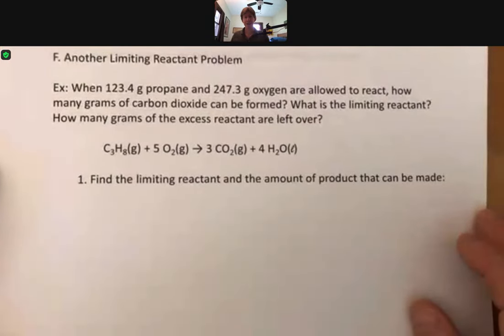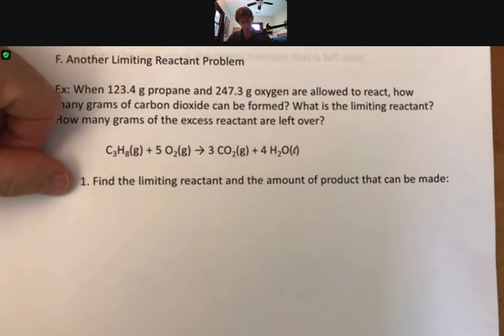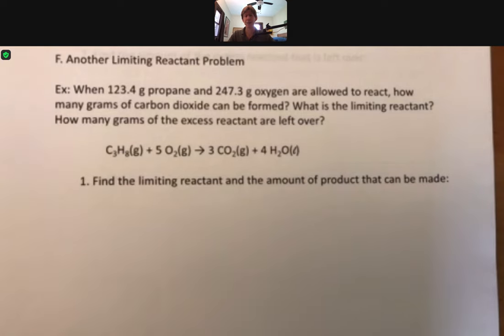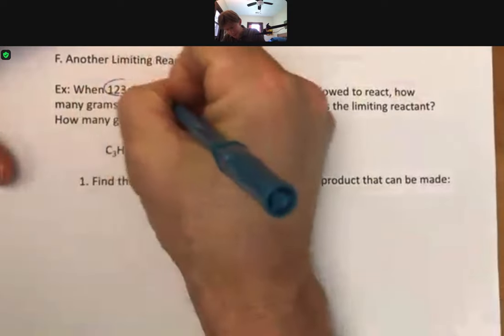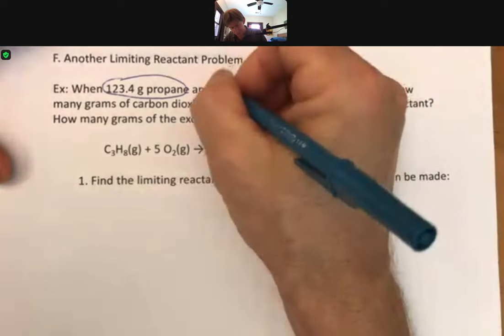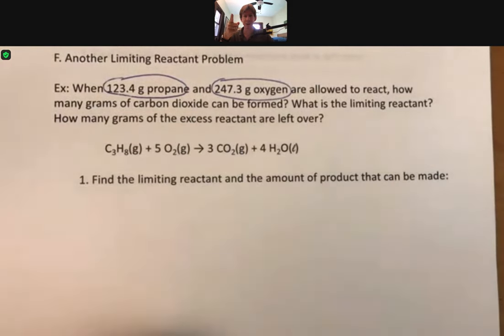And so instead of breaking it down into five parts as we did before, we're just going to break it down into two parts now. First, find the limiting reactant and the amount of product that can be made. When we read over this problem, I see that I've got an amount in grams of the propane and an amount in grams of the oxygen. And so, ding ding ding, limiting reactant problem.